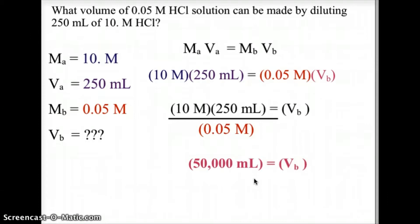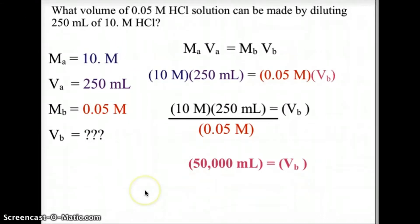Now that seems quite a bit, but notice the change in molarity from 10 molar down to 0.05 molar — that's a tremendous change in concentration, so that's going to need a much larger volume. And that's why we have 50,000 milliliters. As we had with gas laws, there are inverse relationships here: as molarity goes up, volume goes down. If you increase the volume, that's going to drive down the molarity — again, an inverse relationship.